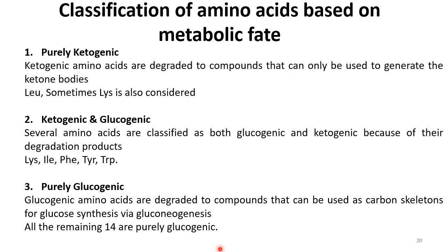Classification based on metabolic fate has two main categories. Purely ketogenic amino acids — such as leucine, and sometimes lysine — are degraded to compounds that can be used to generate ketone bodies. Purely glucogenic amino acids are degraded to compounds that serve as carbon skeletons for glucose synthesis via gluconeogenesis. Several amino acids are classified as both glucogenic and ketogenic because of the nature of their degradation products.